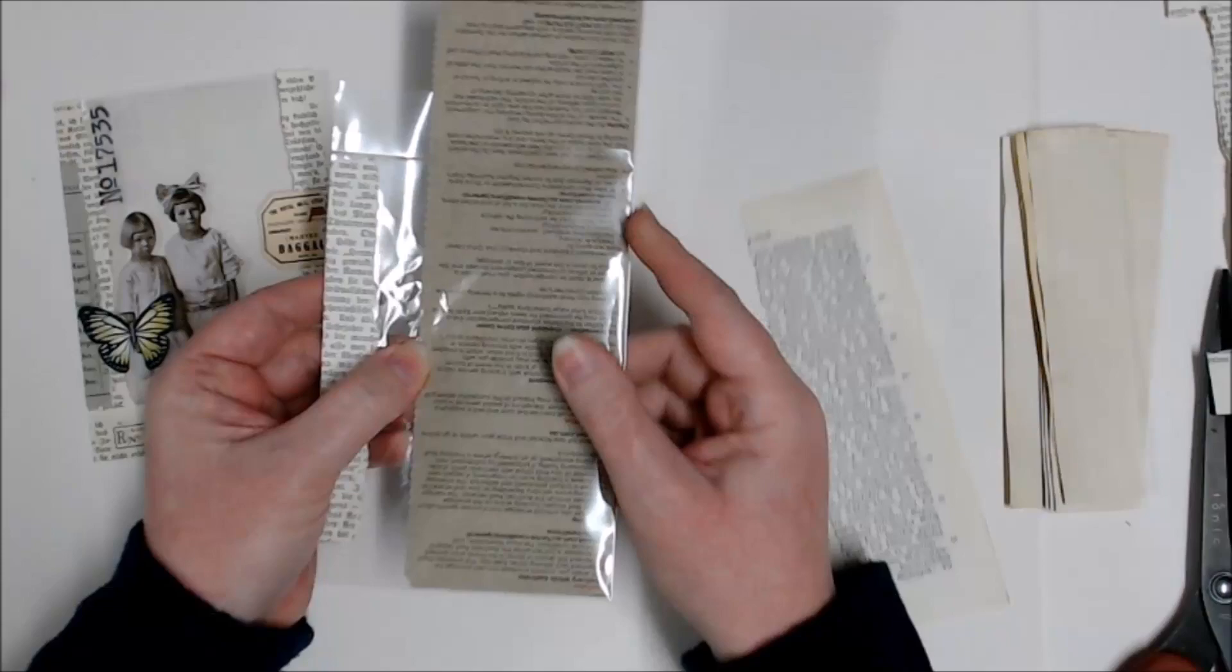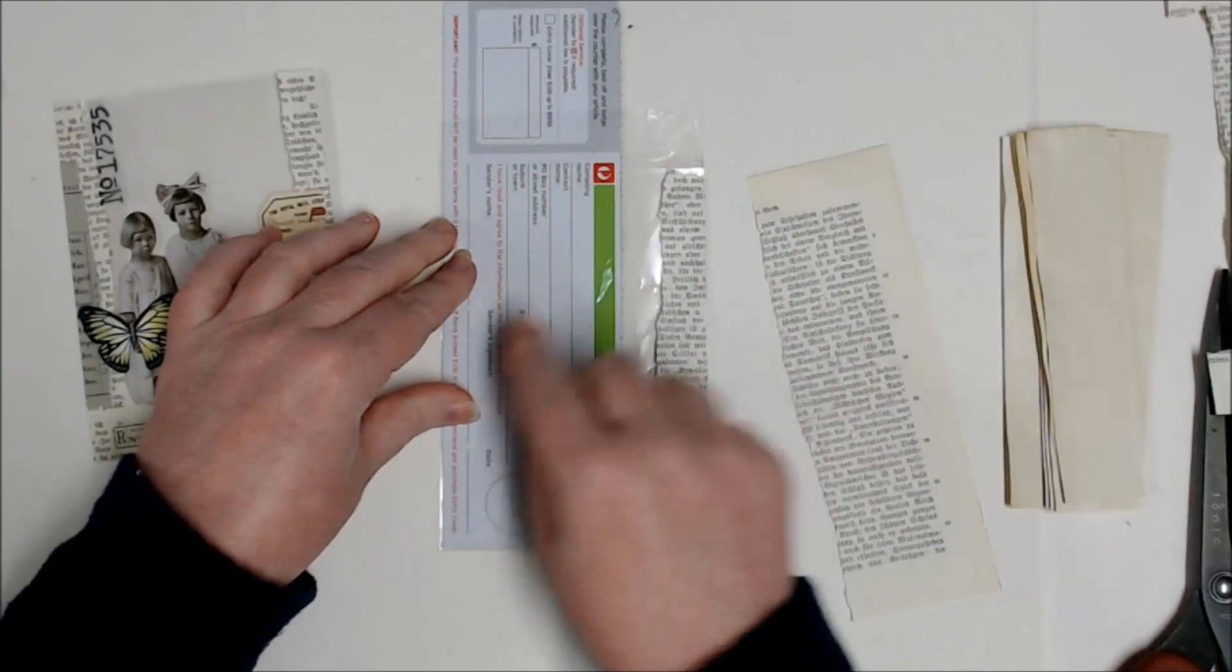If your cellophane bag is too floppy and you're finding it hard to push it into the edge, just take a piece of card and insert it into your cellophane bag so that it's pushed hard up against the side that you want to glue.